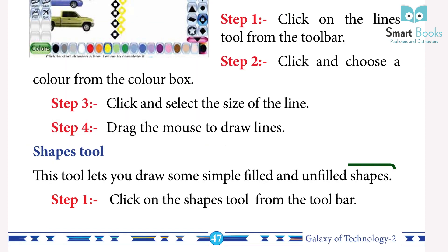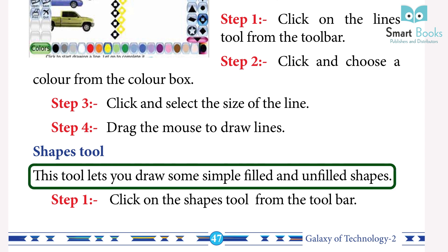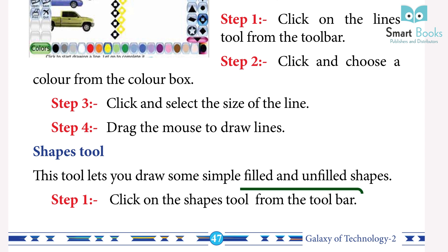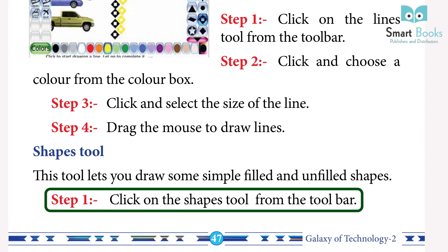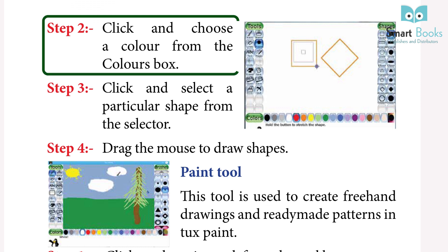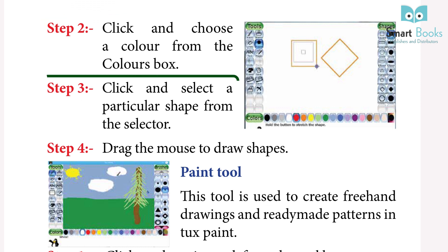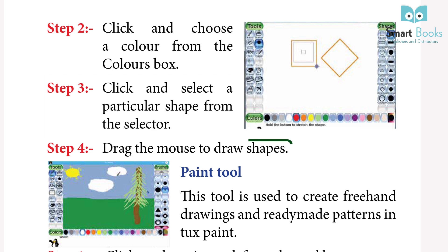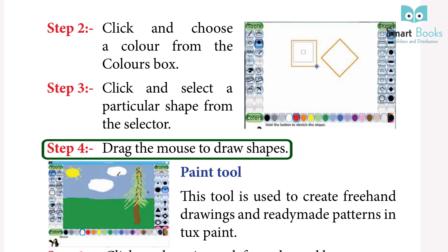Shape Tool: This tool lets you draw simple filled and unfilled shapes. Step 1: Click on the Shape Tool from the Toolbar. Step 2: Click and choose a color from the color box. Step 3: Click and select a particular shape from the selector. Step 4: Drag the mouse to draw shapes.